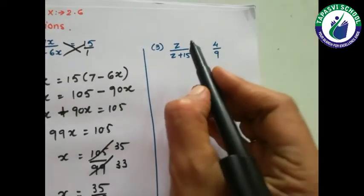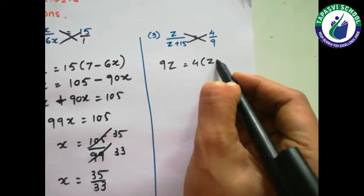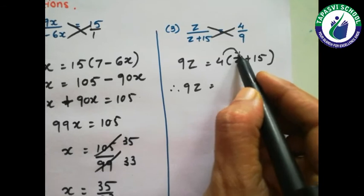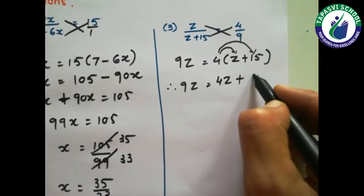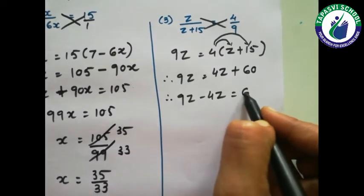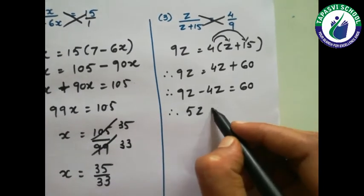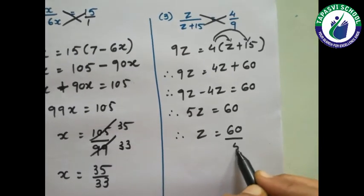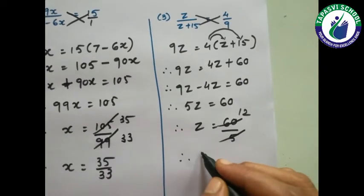Now same in sum 3: 9z over 4 equals z plus 15. Cross multiplying: 4 into (z + 15) gives 4z + 60. So 9z minus 4z equals 60, which gives 5z equals 60. Z will be the subject: 60 upon 5, and 5 twelves are 60, so z equals 12.